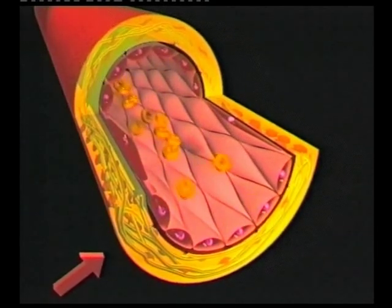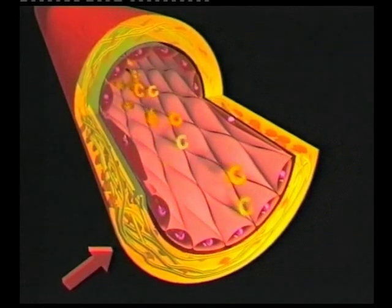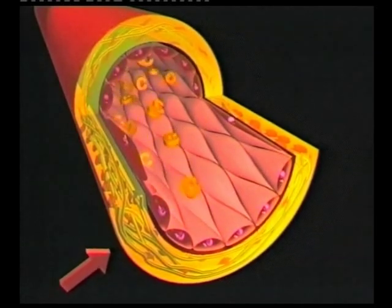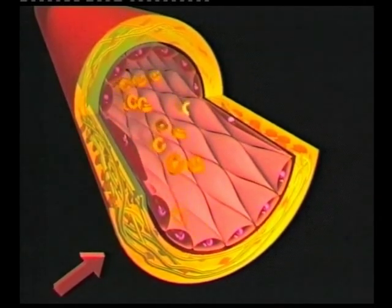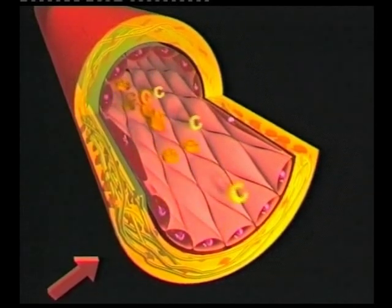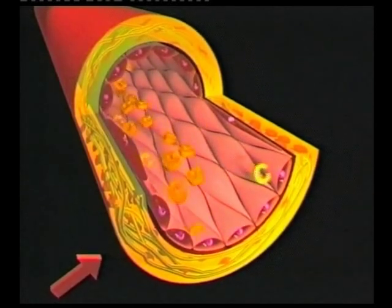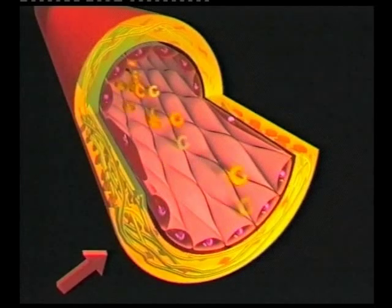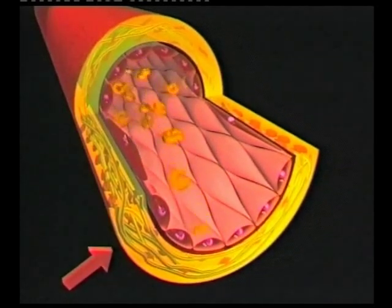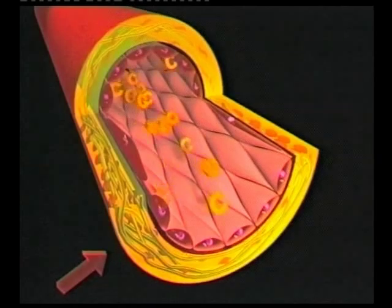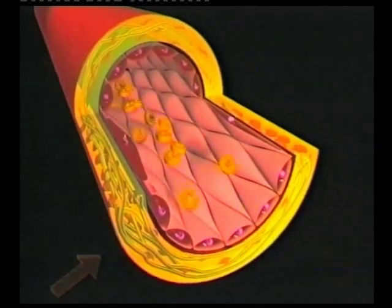Just as the damage caused by scurvy can be reversed by an optimal supply of vitamin C, deposits in the arterial walls can also be broken down. This doesn't lead to a complete breakdown of the deposits in every case, but these self-healing forces are activated in those parts of the arterial wall which are capable of regeneration.